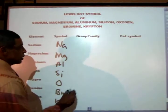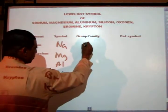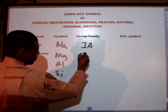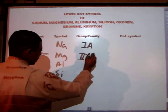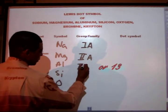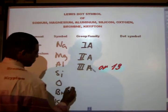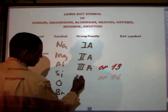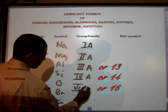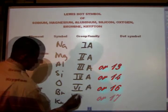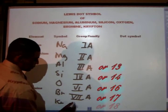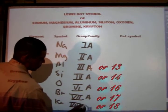Sodium is found in group 1A. Magnesium, group 2A. Aluminum, group 3A. Silicon, group 4A. Oxygen, group 6A. Bromine, group 7A. And krypton, group 8A.